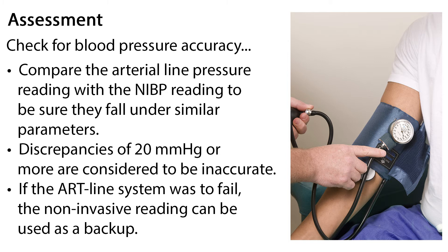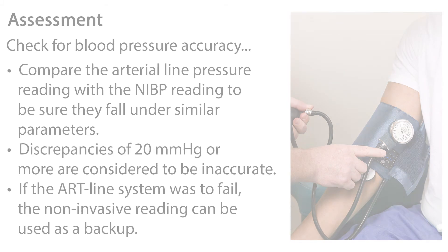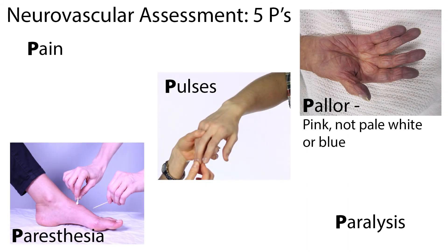To continue your assessment, check for blood pressure accuracy by comparing the arterial line pressure reading with the non-invasive blood pressure reading to be sure they fall within similar parameters. Discrepancies of 20 mmHg or more are considered to be inaccurate. If the art line system were to fail, the non-invasive reading can be used as a backup.